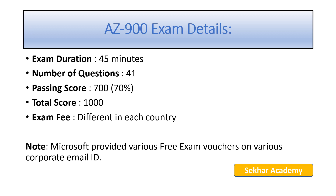Here you can see AZ-900 exam details: exam duration 45 minutes, number of questions 41, passing score 700, that's 70%, total score 1000. Exam fees are different in each country — the exam price will vary depending on the region.